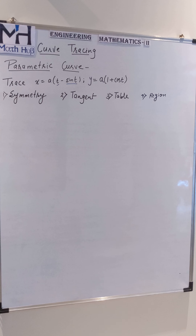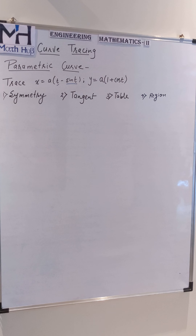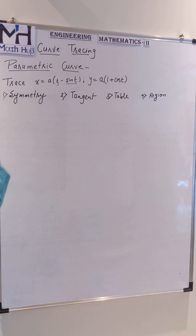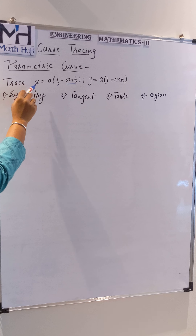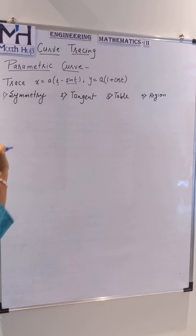Welcome to Maths Hub. In this video we will learn about curve tracing. The part we are learning is parametric curve. The curve they have given is x = a(t − sin t), y = a(1 + cos t). This is what we call a parametric curve.